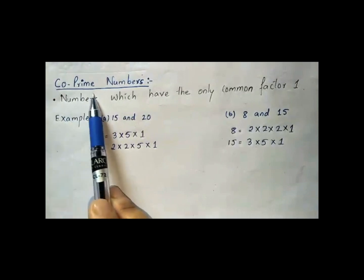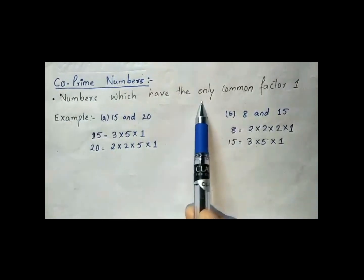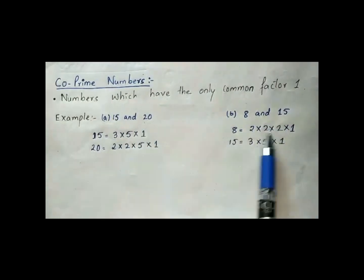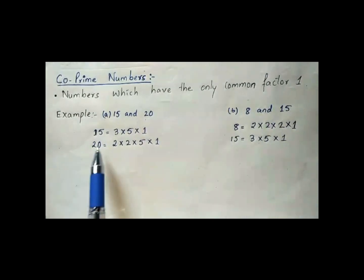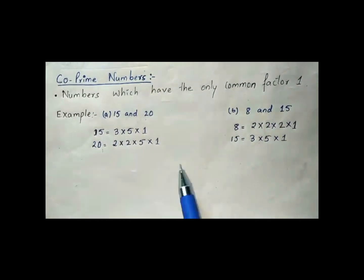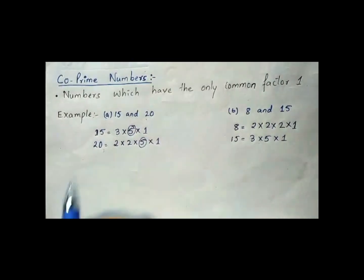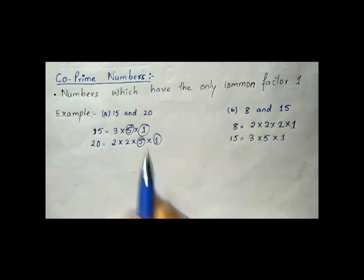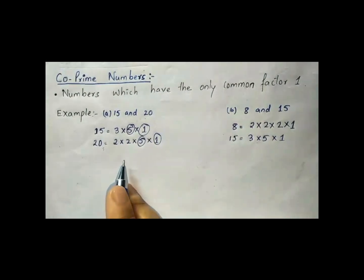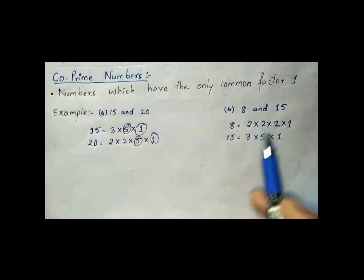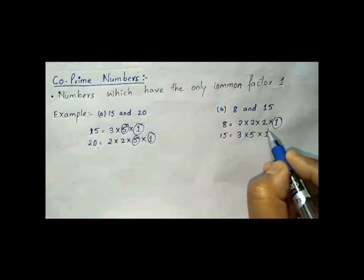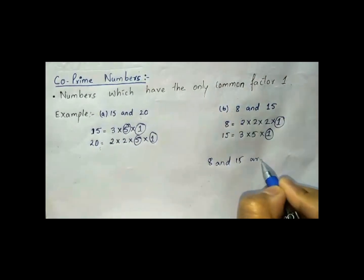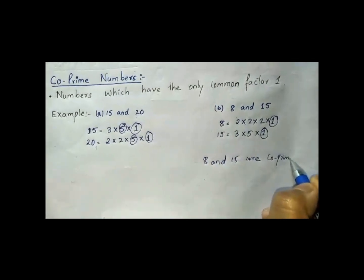Now let us see what are co-prime numbers — numbers which have only common factor 1. Here I have given two examples: 15 and 20, and 8 and 15. The factors of 15 and 20 show that 5 and 1 are common, so they have two common factors — 15 and 20 are not co-prime numbers. Now for 8 and 15, only 1 is common, so 8 and 15 are co-prime numbers.